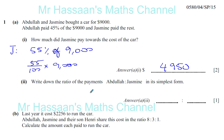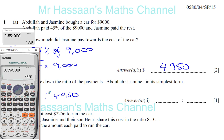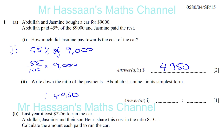That would actually have helped us because we've got to do something similar for Part 2. Part 2 says: write down the ratio of the payments, Abdullah to Jasmine, in its simplest form. We know what Jasmine paid, which is $4,950. Abdullah paid $9,000 minus that. So we take $9,000 and subtract $4,950, which gives us $4,050.